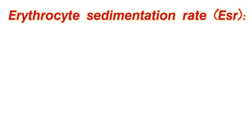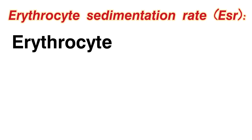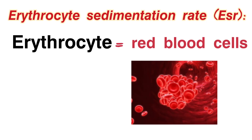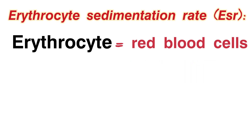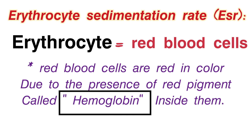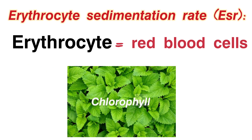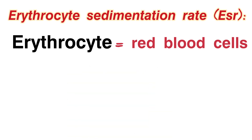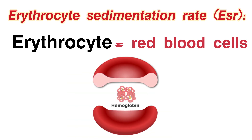Erythrocyte sedimentation rate. Erythrocyte means red blood cells. Why is our blood red in color? It's because of a protein called hemoglobin. For example, in trees and plants, chlorophyll is a green pigment — similarly, we have hemoglobin, a red color pigment protein present in our blood.